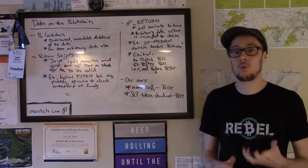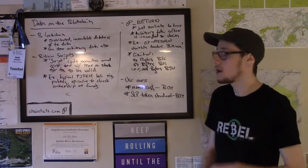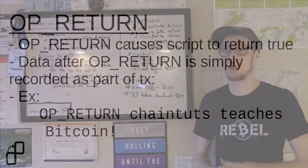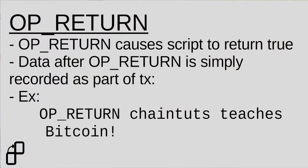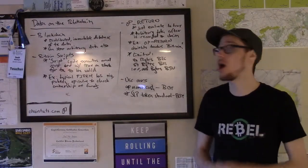Now let's talk about where this fits into adding arbitrary data to the blockchain. Bitcoin scripts have a really cool special operator called OP_RETURN, and all this operator does is cause the script to automatically validate to true when this operator is hit during execution. So you can have a script that simply has OP_RETURN at the beginning, which means that transaction is automatically considered valid by nodes on the network, and after that you can include arbitrary data that will be recorded as part of that transaction on the blockchain.